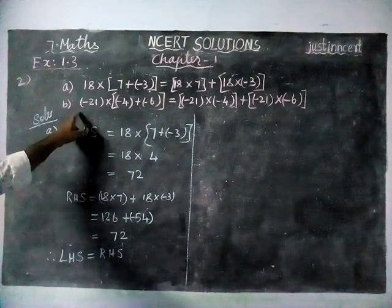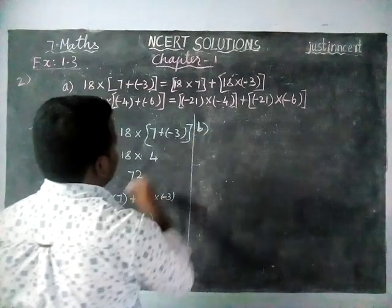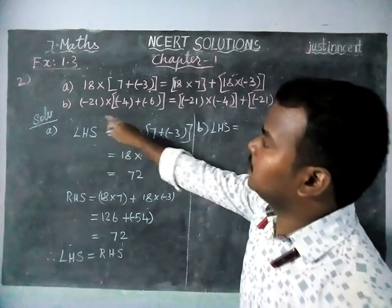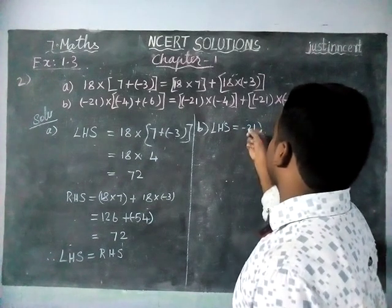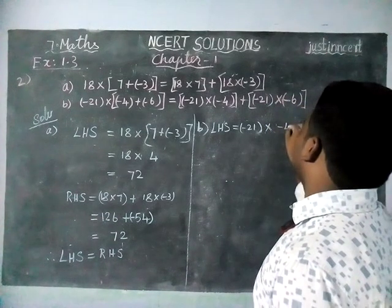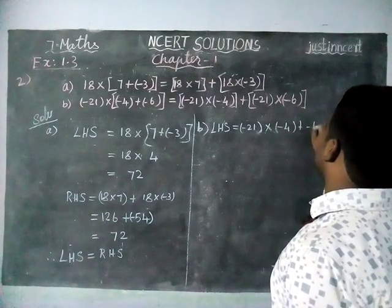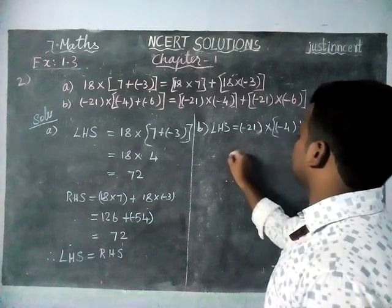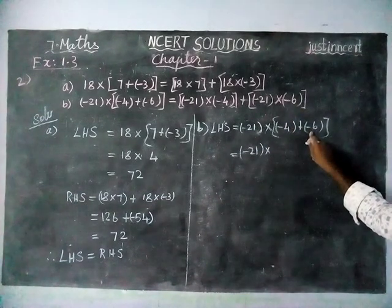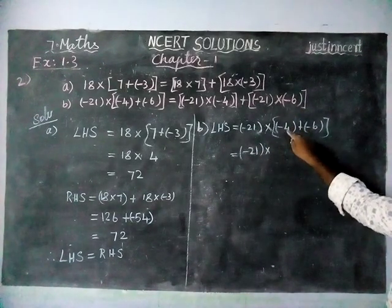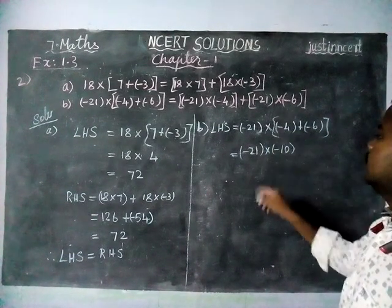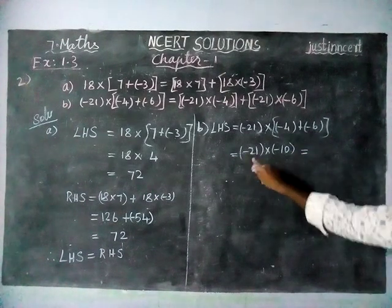Now we will check it for Option B. Option B: the left hand side is equal to minus 21 into minus 4 plus minus 6. Both signs inside the bracket are the same, so we add them and keep the same sign. 4 plus 6 is equal to 10, and both are minus, so it is minus 10. When we multiply minus 21 into minus 10, we are getting 210.